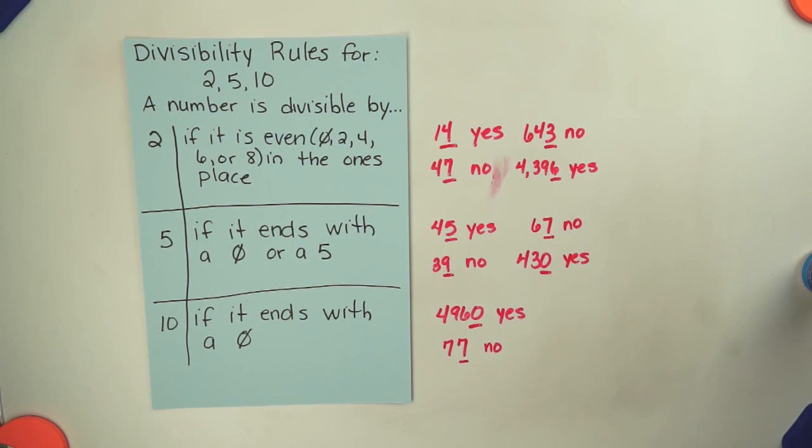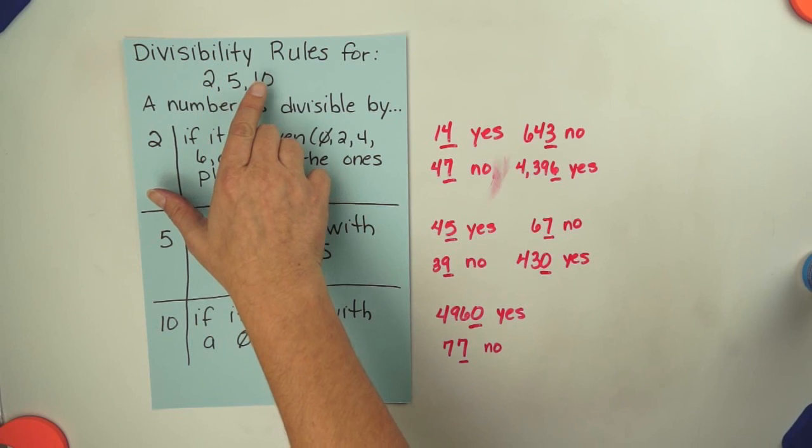And that's the end of our lesson on the divisibility rules for 2, 5, and 10.